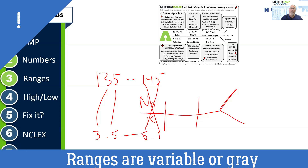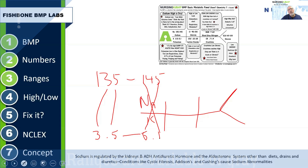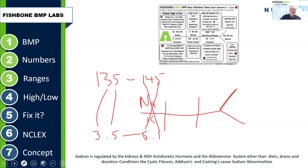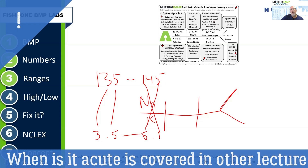5.5 is high, 6 is high, 7 — we need to get that potassium off the patient. On the low end, 3.4 is gray. What's the underlying cause? A 3.0 is really something to worry about. So when looking at ranges, you want a general idea of the numbers.